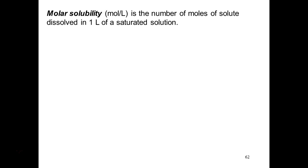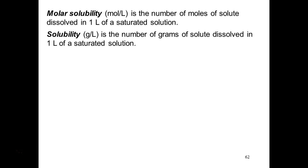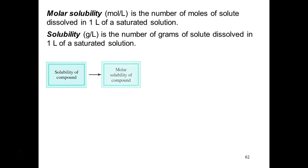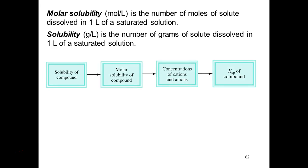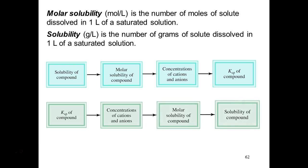There are multiple ways to communicate solubility. One is molar solubility — the number of moles of solute dissolved in a liter of a saturated solution. A saturated solution contains as many ions as it can dissolve just before formation of a precipitate would be necessary. Another unit is solubility in grams per liter — the number of grams of solute dissolved in a liter of saturated solution. We're going to talk about converting between these quantities in the following examples.